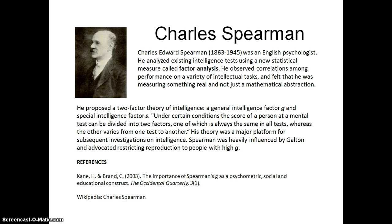He felt that under certain conditions, the score of a person on a mental test could be divided into two parts: one which stayed the same on all the tests, and one that varied from test to test. This theory was then a general factor G and a special or differing factor S. His theory was a major platform for other researchers on intelligence.